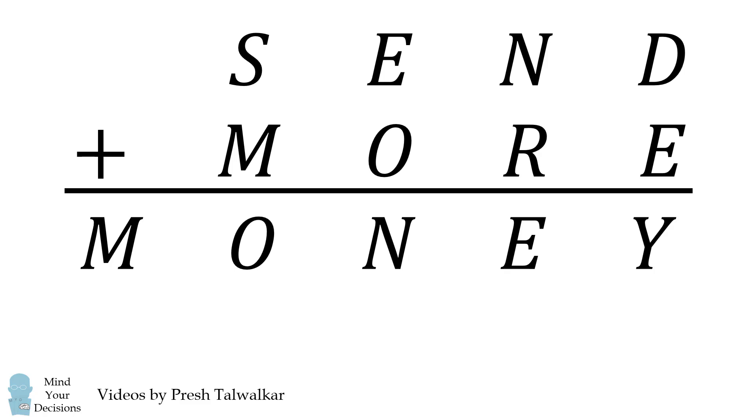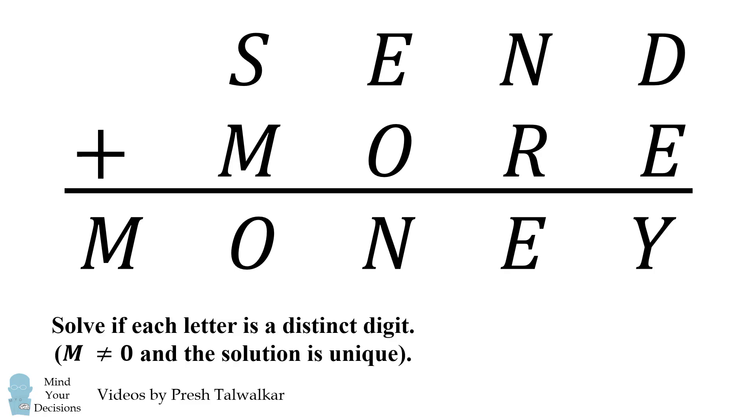Here is a tremendous puzzle. Send plus more is equal to money. You have to solve for each letter where each letter is a distinct digit. M is not equal to zero, and the solution is unique.